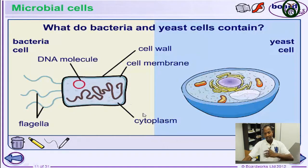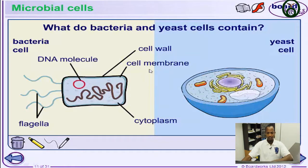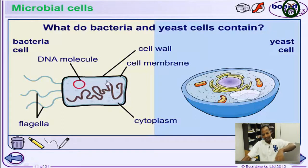The cytoplasm is where metabolic reactions take place. The cell membrane is a partially permeable membrane that controls what goes in and out of the cell. The cell wall gives rigidity and protection to the cell. So the bacterial cell contains all of these.